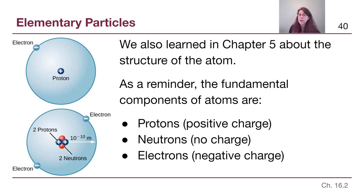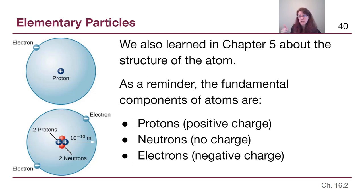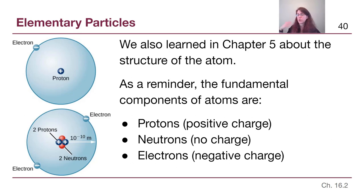Before we get further into this chapter, we should remind ourselves of the structure of the atom from chapter 5 — something we may have seen in high school chemistry but may have forgotten. An atom contains protons with a positive charge, neutrons with no charge at all, and electrons with a negative charge. Those are three very common particles in the world around us — we are made up of those particles.